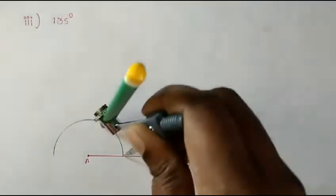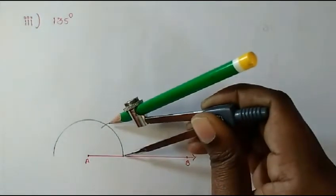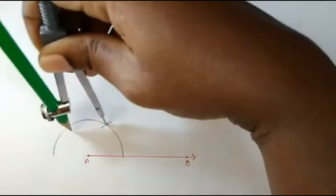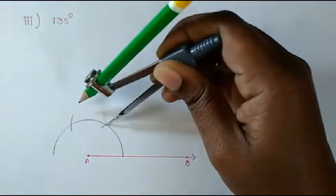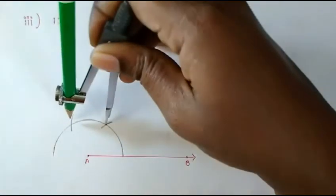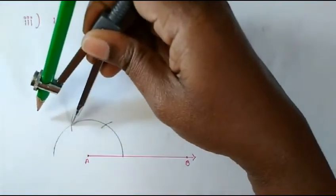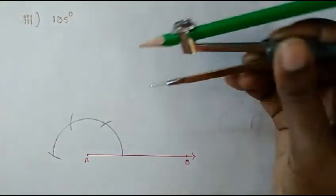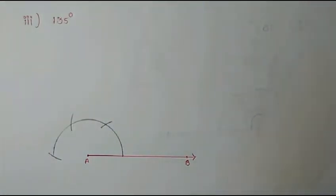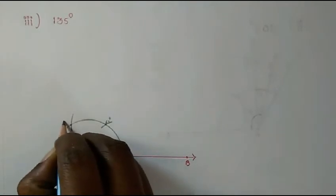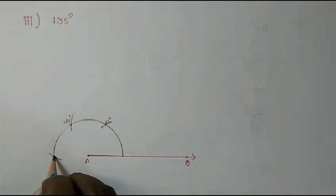Don't change the compass measurement. Keep it at the point where the line and the semicircle intersect and make one cut — this is 60 degrees. On the next intersection point, make another cut — this becomes 120 degrees, because 60 plus 60 is 120. One more cut gives us 180 degrees, the straight angle.